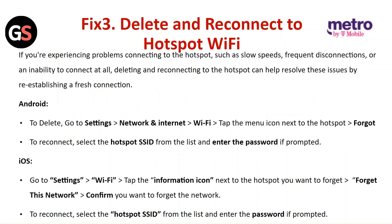Fix three: delete and reconnect to hotspot Wi-Fi. If you are experiencing problems connecting to the hotspot such as low speed, frequent disconnections, or an inability to connect at all, deleting and reconnecting to the hotspot can help resolve this issue by re-establishing a fresh connection. For Android, to delete, go to Settings, then Network and Internet, then Wi-Fi. Tap on the menu icon next to the hotspot and click on Forget. To reconnect, select the hotspot SSID from the list and enter the password if prompted.